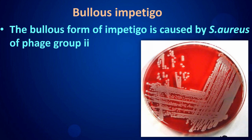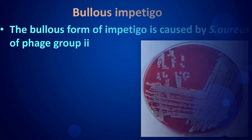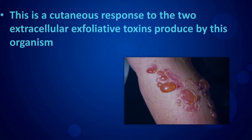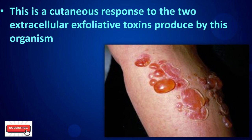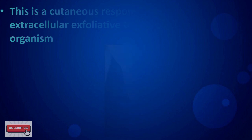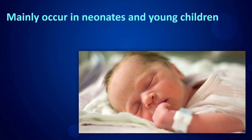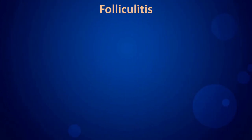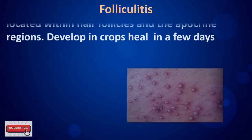Bullous impetigo: the bullous form of impetigo is caused by Staphylococcus aureus of phage group 2. It is a cutaneous response to two extracellular exfoliative toxins produced by this organism, and mainly occurs in neonates and young children.